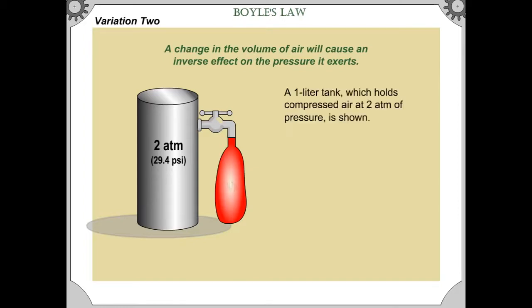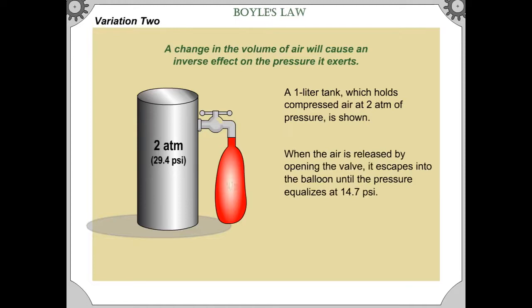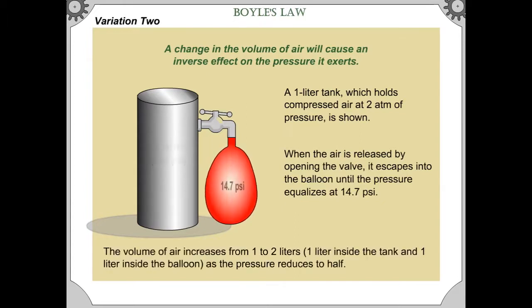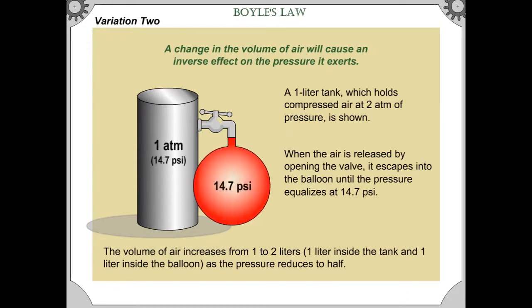A 1 liter tank, which holds compressed air at 2 atm of pressure, is shown. When the air is released by opening the valve, it escapes into the balloon until the pressure equalizes at 14.7 psi. The volume of air increases from 1 to 2 liters — 1 liter inside the tank and 1 liter inside the balloon — as the pressure reduces to half.